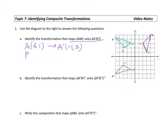I have point B at (4, 5), which maps onto B prime at (-5, positive 4). Remember, we could also do point C maps onto C prime, but it's not entirely necessary — as long as you get two of them done, you're okay.